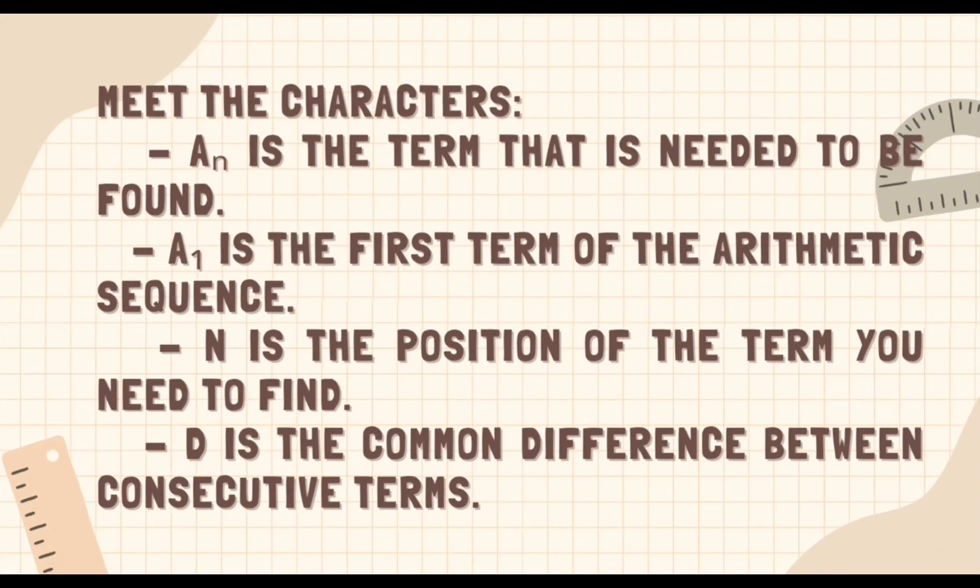Meet the characters. A sub n is the term that is needed to be found. A sub 1 is the first term of the arithmetic sequence. N is the position of the term you need to find. And d is the common difference between consecutive terms.